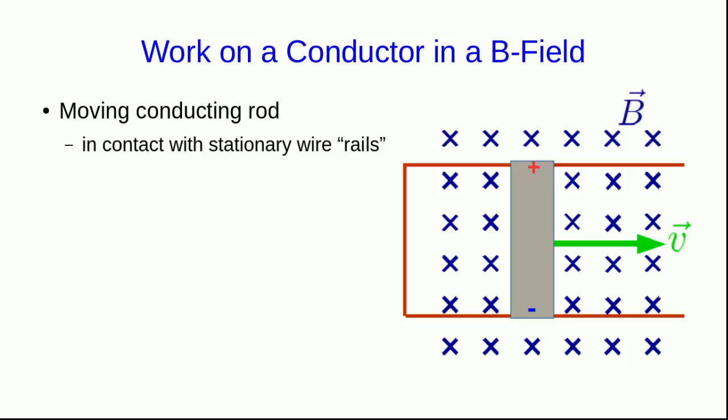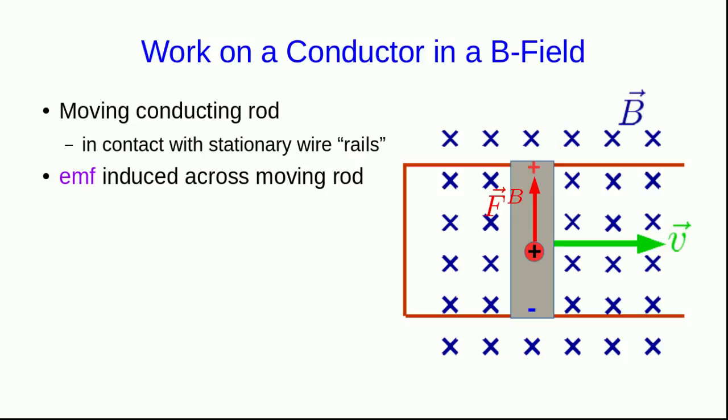The grey rod is moving, but the orange wires are not. We can use the right-hand rule to see that the magnetic force on positive charges inside the rod is up. That'll cause charge separation and an emf induced across the rod. Because the rod is in contact with the wires, no charge builds up at either end — the plus and minus are simply indicating the high V and low V sides of the emf across the rod.